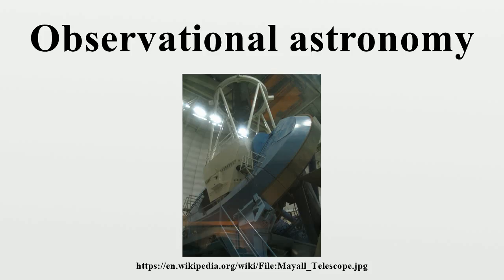Domes are often opened around sunset, long before observing can begin, so that air can circulate and bring the entire telescope to the same temperature as the surroundings. To prevent wind buffet or other vibrations affecting observations, it is standard practice to mount the telescope on a concrete pier whose foundations are entirely separate from those of the surrounding dome and building. To do almost any scientific work requires that telescopes track objects as they wheel across the visible sky — in other words, they must smoothly compensate for the rotation of the Earth.